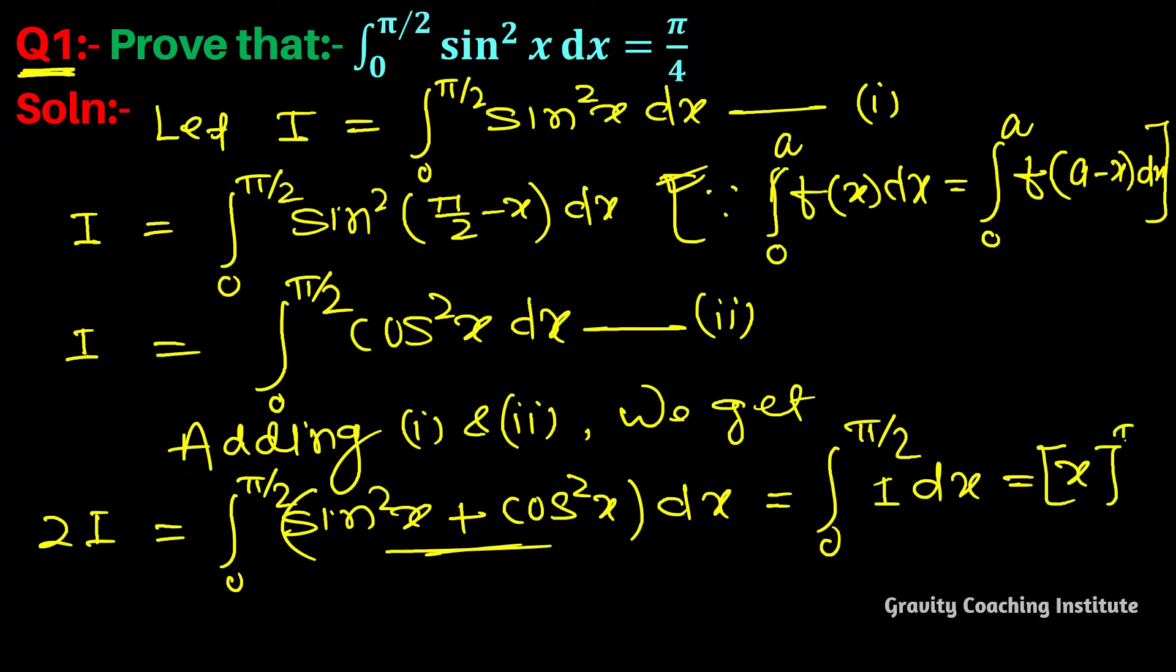2I equals pi by 2 minus 0. So, 2I equals pi by 2. So, I equals pi by 4.